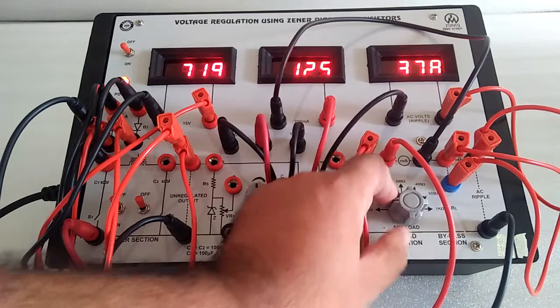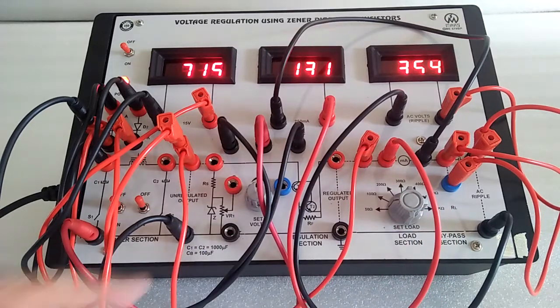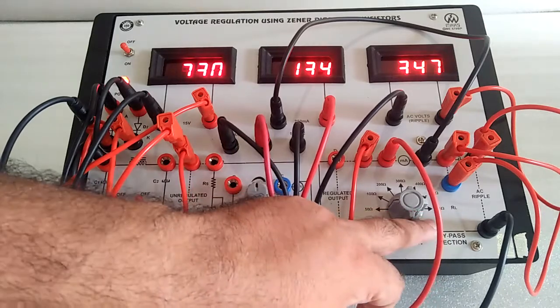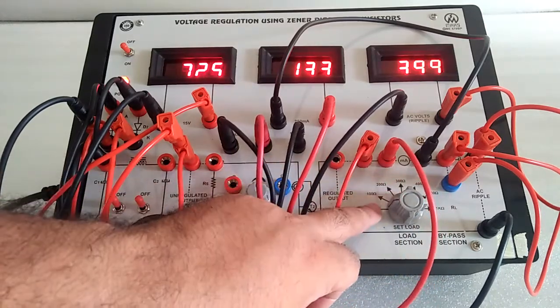But in case of using voltage regulation with Zener diode, the voltage is constant for such loads, and after that it will drop.